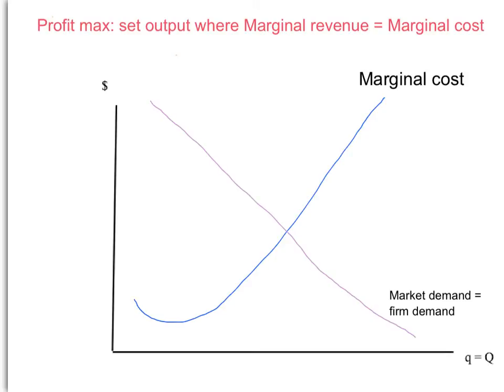Now we need to work out the profit-maximising decision for the monopoly. The profit maximisation rule is still the same as it was for a perfectly competitive firm: to maximise profits, the monopoly wants to set its output where marginal revenue equals marginal cost — the same as for a perfectly competitive firm.